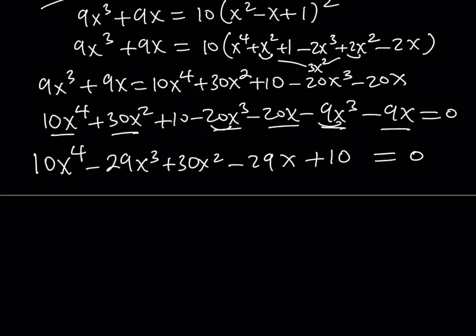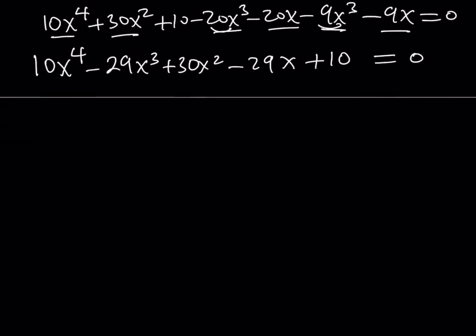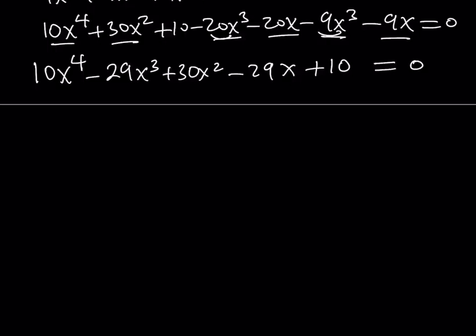Now, what is so special about this equation? Well, it has some type of symmetry. It is a symmetrical equation. Because, if you look at the coefficients that are the same distance from the center, which is 30x squared, you're going to notice that they're equal. So, that's kind of nice. We can put those together. We're going to divide everything by x squared. 10x squared minus 29x plus 30 minus, when we divide by x squared, it's going to be 29 over x and it's going to be 10 over x squared.